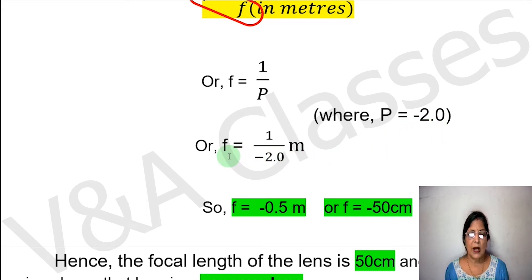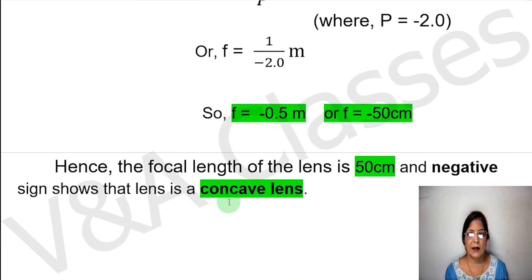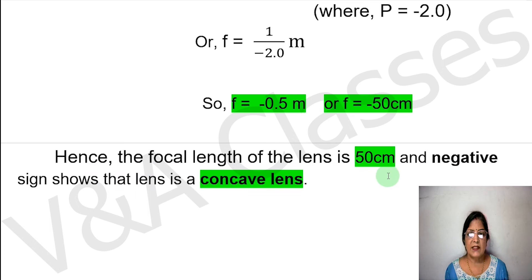Substituting the value: f equals 1 by minus 2.0, which gives us f equals minus 0.5 meters. Converting to centimeters, f equals minus 50 centimeters. Hence, the focal length of the lens is 50 centimeters, and the negative sign shows that the lens is a concave lens.